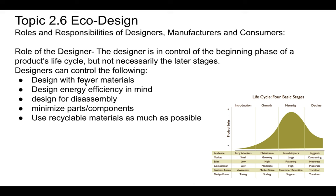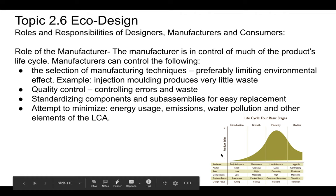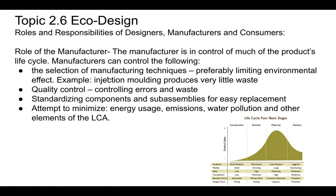Moving on to manufacturers — this is really where most of the energy, materials, and waste occur. Manufacturers are in control of much of the product's life cycle after it's introduced. They can control manufacturing techniques to limit environmental effects; for example, using injection molding, which has very little waste involved when making plastic products.